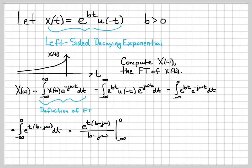We now have to evaluate this quantity at the limits of 0 and minus infinity. When t equals 0, we get 1 on the numerator because e to the 0 is 1, with b minus j omega on the denominator. Then we subtract off the quantity evaluated at time minus infinity. e to the minus infinity is 0, so we subtract off 0, leaving us with 1 over b minus j omega.